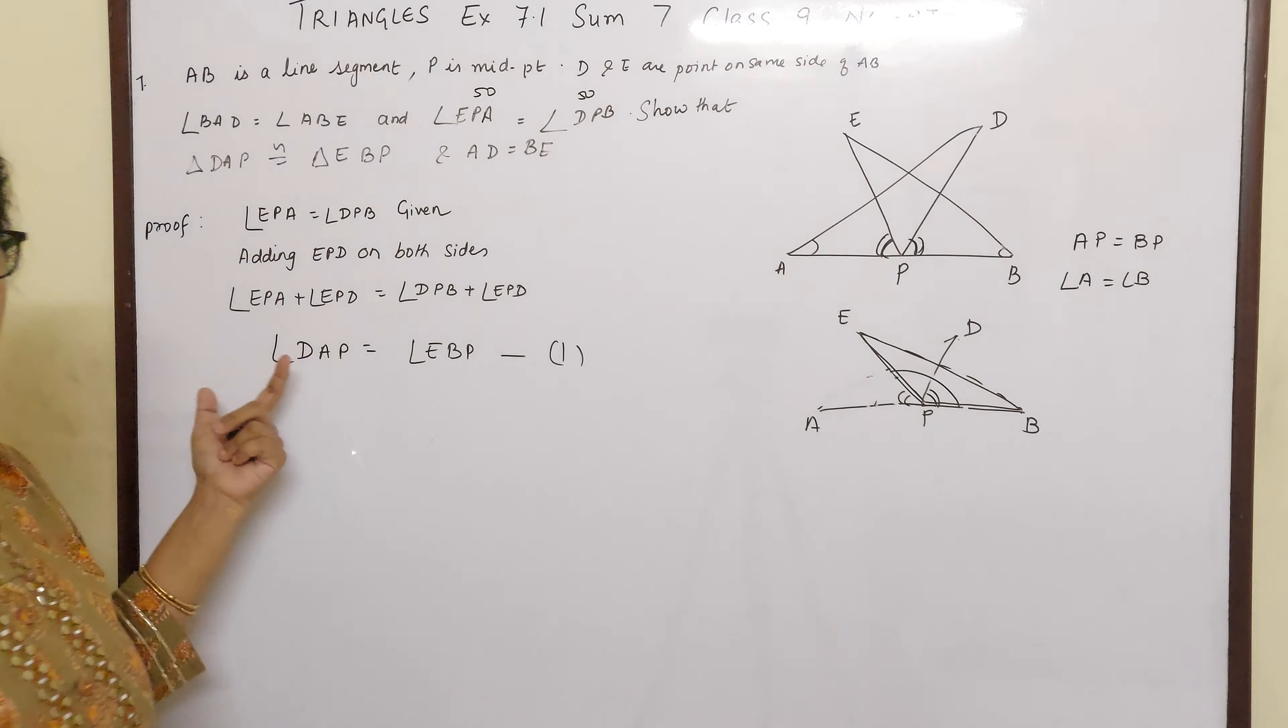So this we have proved, that the angles are equal. But we have to prove that triangles are congruent. So how will we do that?